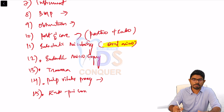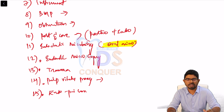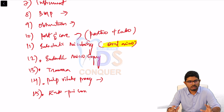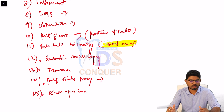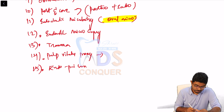Endo-perio lesions cover the relationship between Endo and Perio — primary endo, secondary perio, and their classifications. Learn which treatment is done first, and procedures like hemisection, bicuspidization, root resection, and root-end resection, all of which are part of endo-perio lesions.